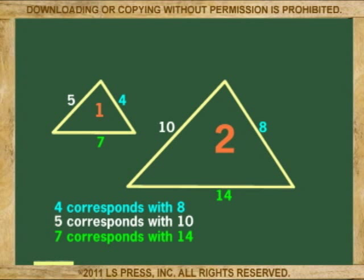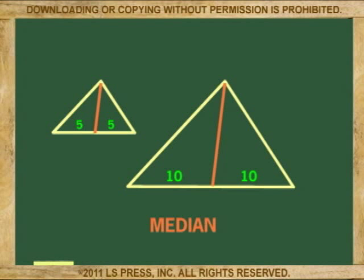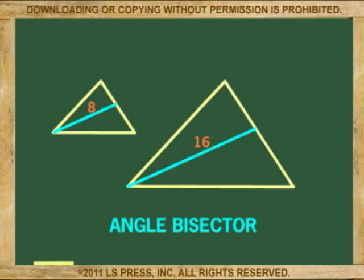This condition about corresponding sides applies to all parts of triangles once you determine that the triangles are similar. For example, the perimeters, medians, altitudes, and angle bisectors of similar triangles are proportional. Let's see some examples.